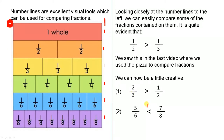The next example: 5 sixths is less than 7 eighths. Here are 5 sixths — 1, 2, 3, 4, 5 — so 5 sixths goes to there. 7 eighths goes to there, and that's why 5 sixths is less than 7 eighths. Now we're just looking at this visually using a diagram, which helps us to understand the idea a little bit better.